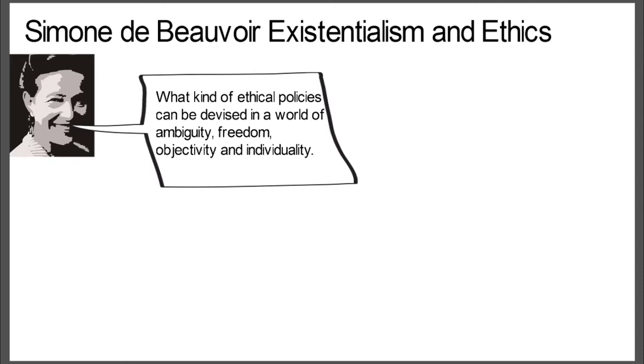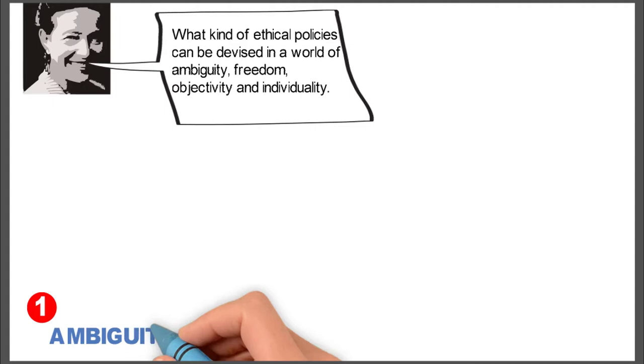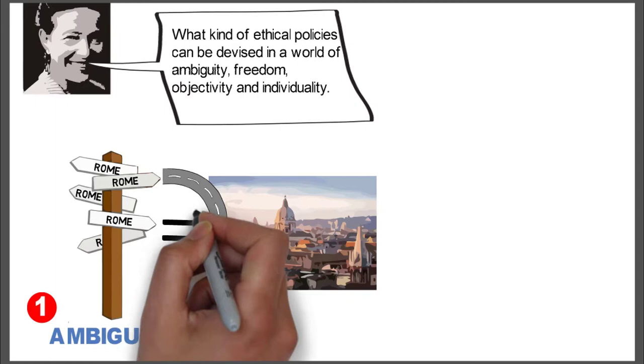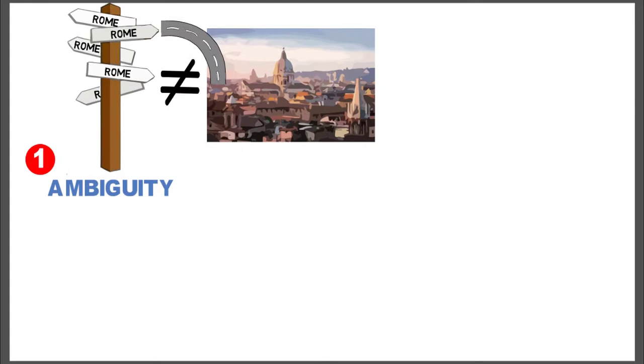Simone starts with the idea that the world is ambiguous. With an ambiguous world, there are many different options, but not all roads lead to Rome, and they're not all equally effective in getting there. Some of them may never even get you to Rome. But the idea is that this is an ambiguous world.